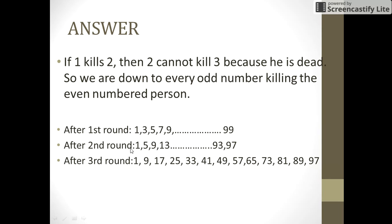So after second round the survivors are 1, 5, 9 and so on till 93, 97. In the next round 1 kills 5 and passes the sword to 9. 9 kills 13 passes it to 17 and so on till 97.